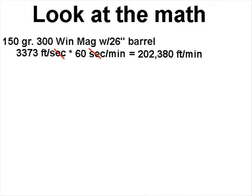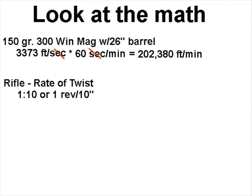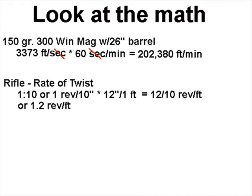The rifle has a twist rate of 1-in-10, or one revolution per ten inches. There are 12 inches per foot, so doing the math gives 12/10 revolutions per foot, or 1.2 revolutions per foot. The units check out — inches cancel top and bottom, leaving revolutions per foot.